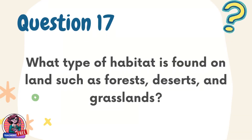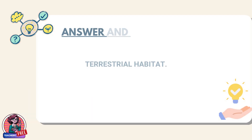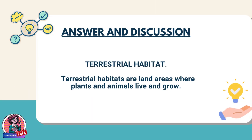Question 17. What type of habitat is found on land such as forests, deserts, and grasslands? Answer: Terrestrial habitat. Terrestrial habitats are land areas where plants and animals live and grow.